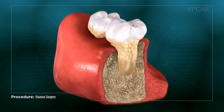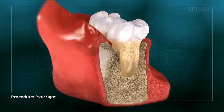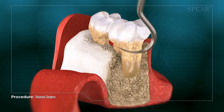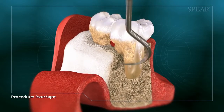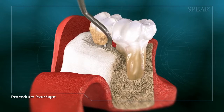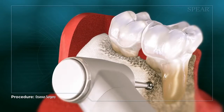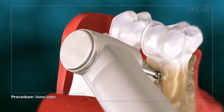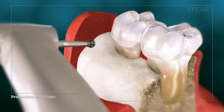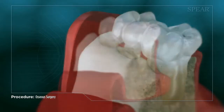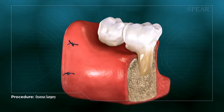To reduce these pockets, first your doctor will expose the area and use a hand scaler to remove the hardened deposits, called calculus, that surround the teeth and root surface. The bone surrounding the tooth is reshaped and smoothened to recreate a favorable bony architecture. Next, the area is sutured and allowed to heal.